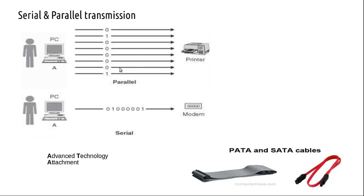Which is better? It depends. USB is now much faster than parallel transmission. Even if you transmit data in parallel, at the receiving end you need to convert parallel to serial using a shift register — parallel-in, serial-out — with buffers. Serial transmission speeds are catching up; USB 3 is very fast.